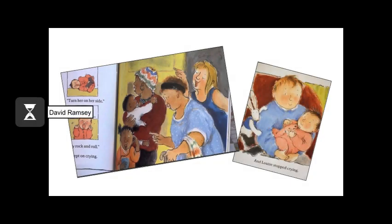In Oonga Boonga, Daniel also has a baby sister, and like Peter, takes care of her. Daniel is, in fact, the only member of the family that can successfully soothe baby Louise when she cries.